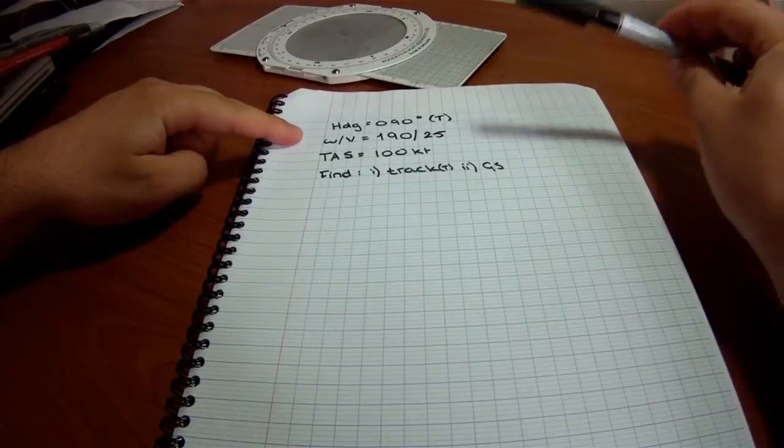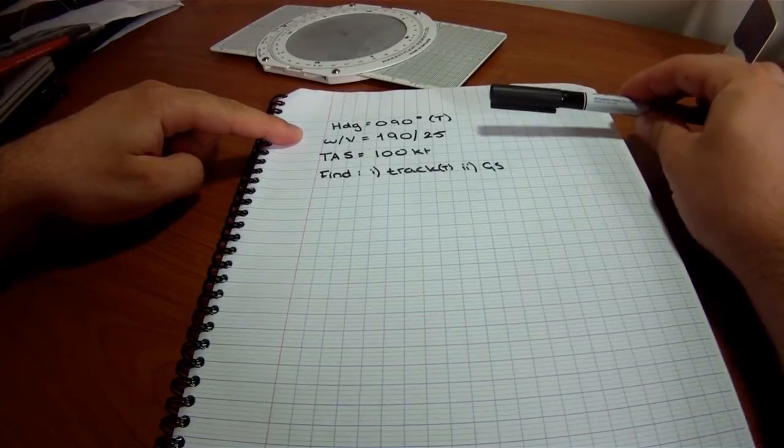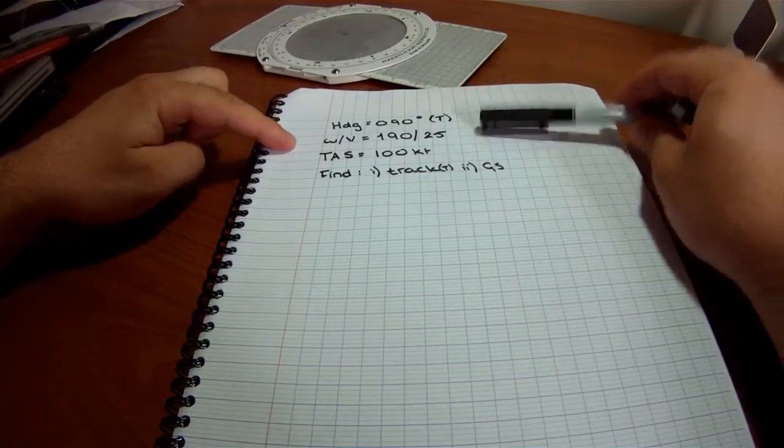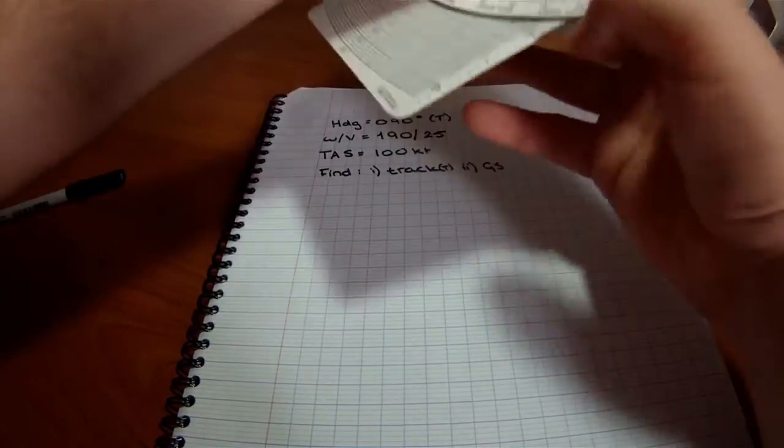unless it is ATIS, winds are always given with true, coming from a true bearing. So, this is 190 true, always.